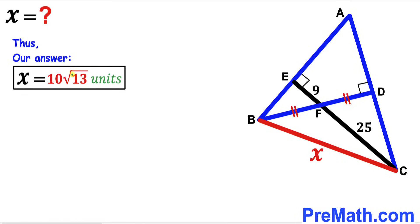After all the calculations and manipulations, our x value turns out to be 10 times the square root of 13 units — that's our final answer. Thanks so much again, please don't forget to subscribe to my channel for more exciting videos. Bye!